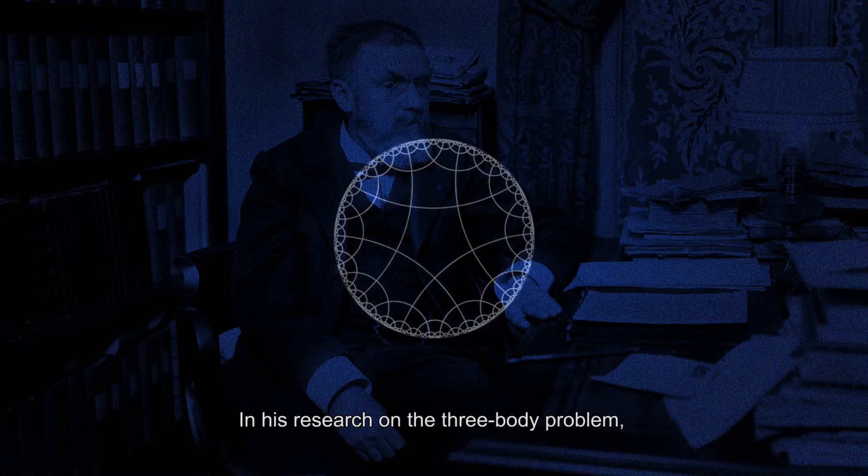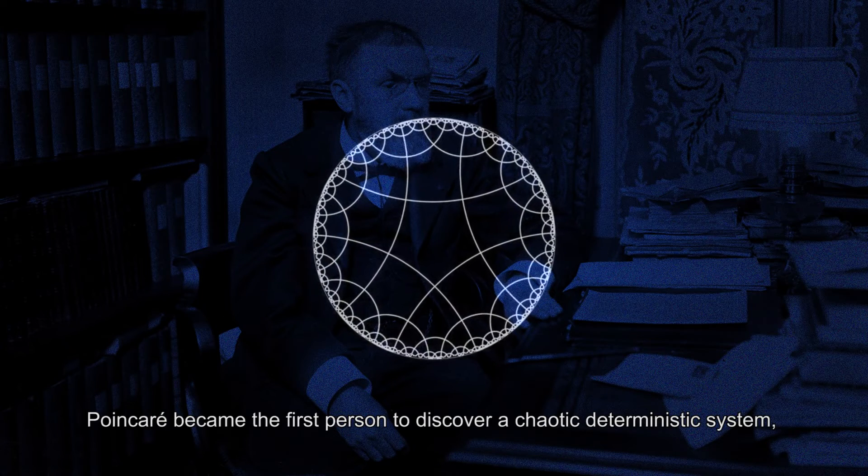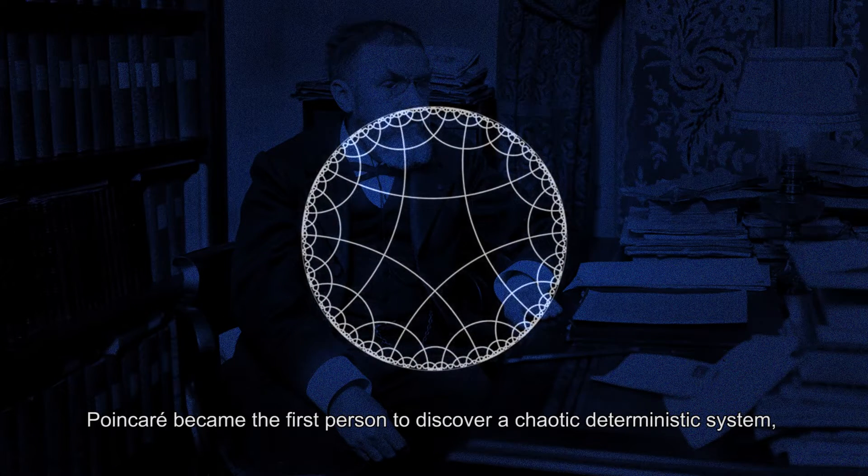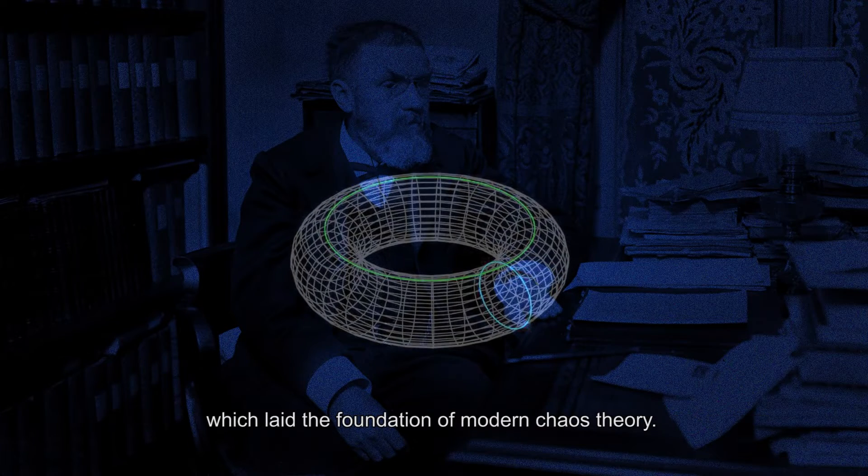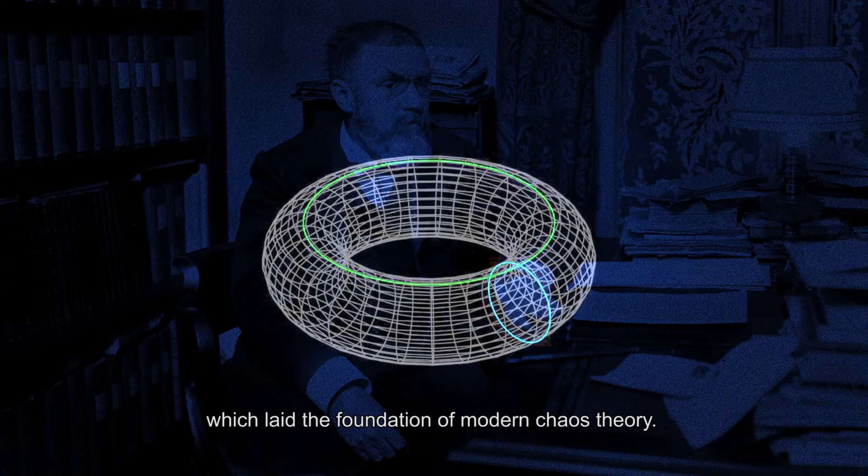In his research on the three-body problem, Poincaré became the first person to discover a chaotic deterministic system, which laid the foundation of modern chaos theory.